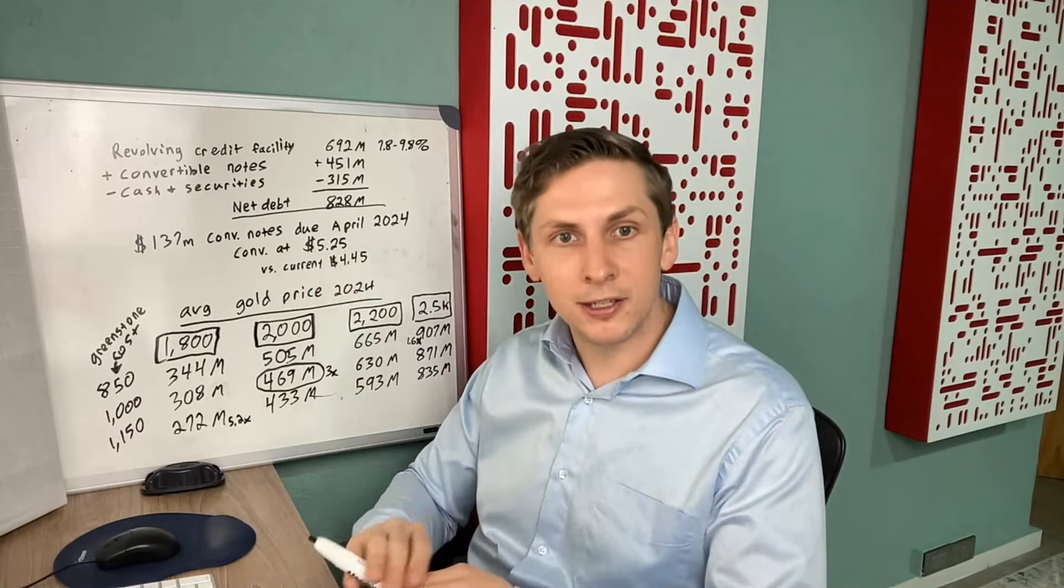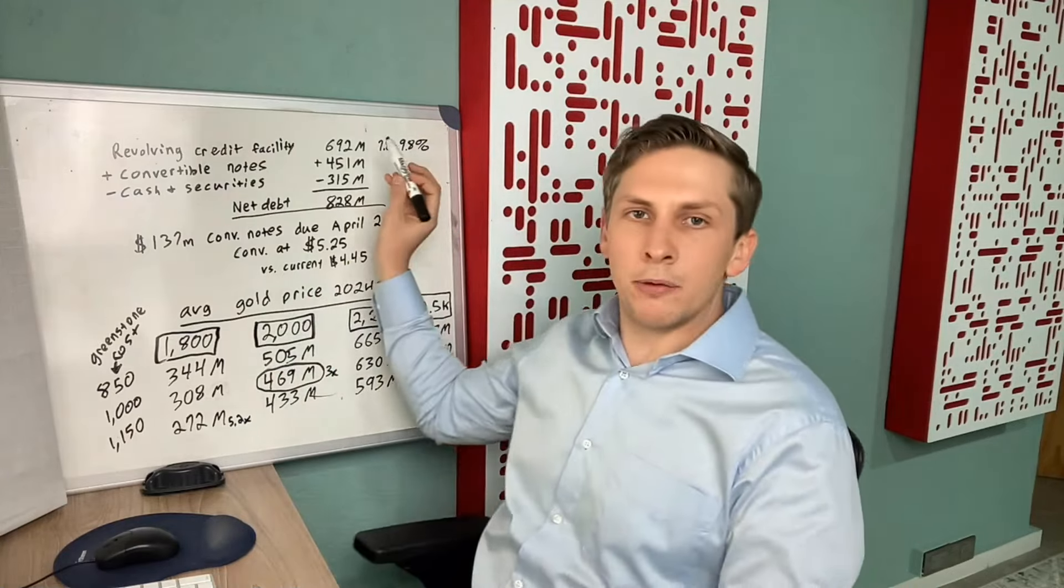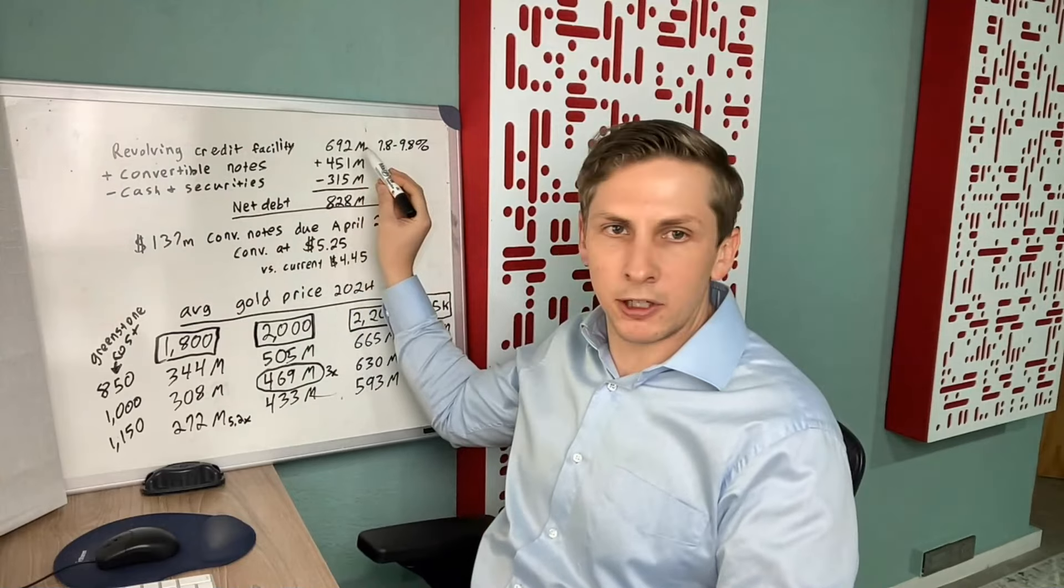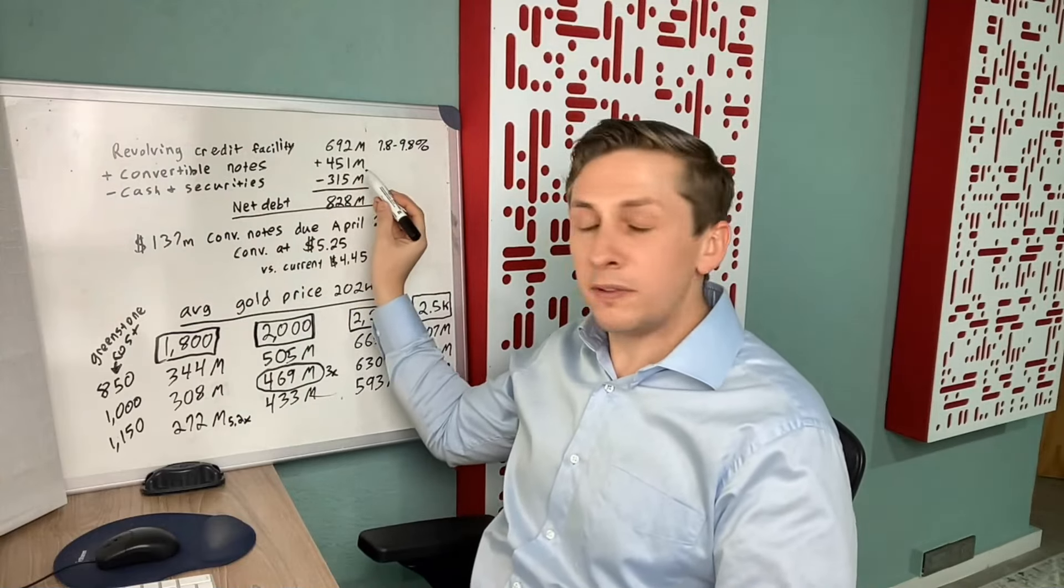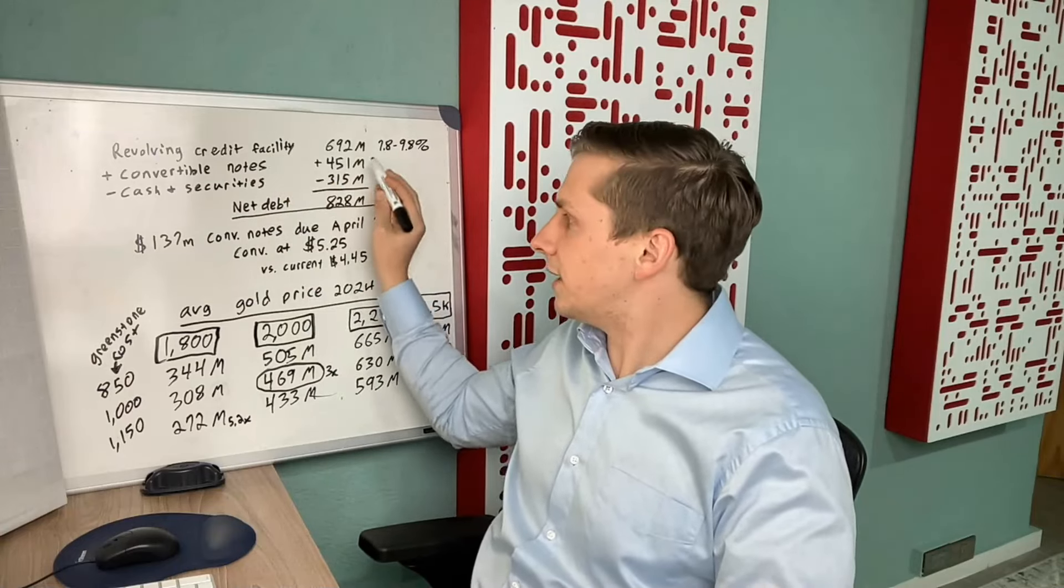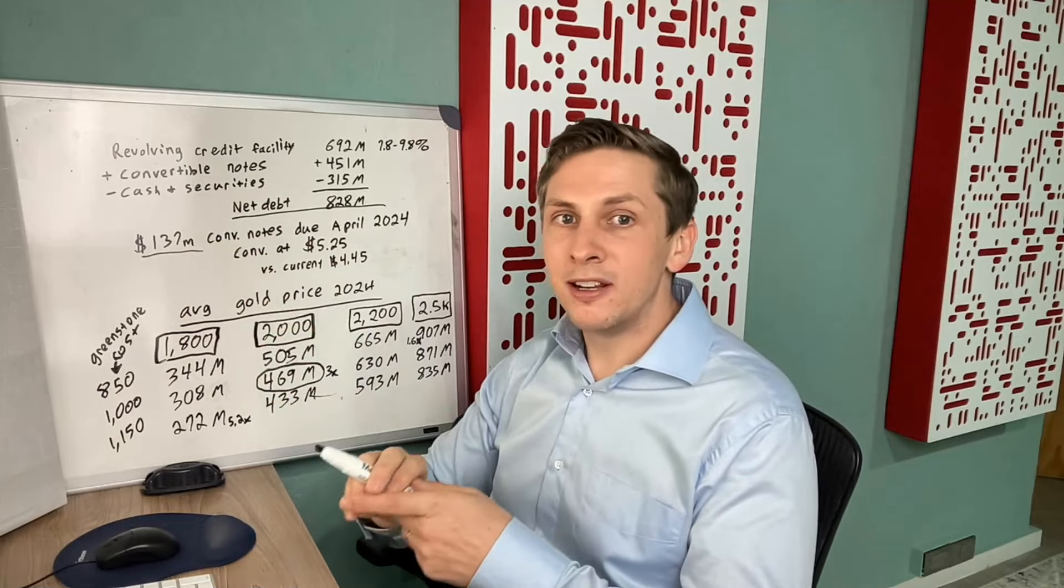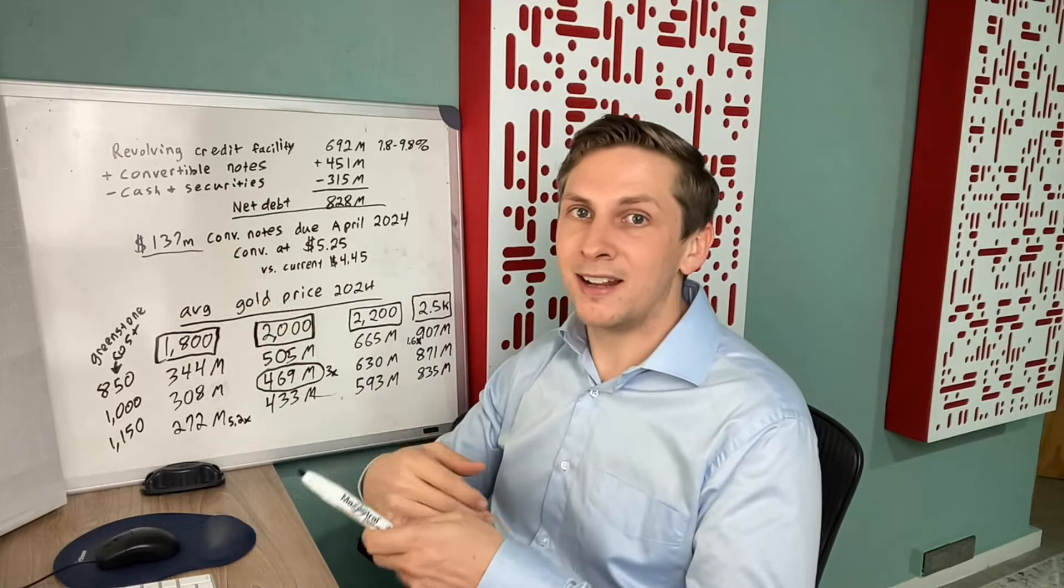That cash would help them to pay down this debt. So you have that revolving credit facility of almost $700 million, and then you have $451 million in convertible notes. You add those together to get the total amount of debt. Everything except the $137 million is considered long-term debt in that it's due more than a year from now.